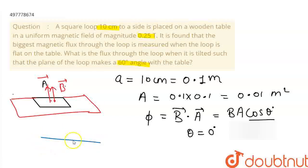The table and the side of the square loop makes 60 degrees. The area vector direction is perpendicular to the plane. The angle between the area vector and magnetic field vector is the same, 60 degrees.